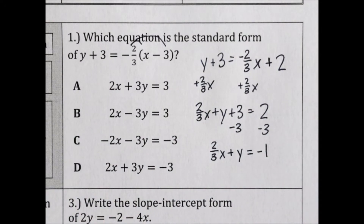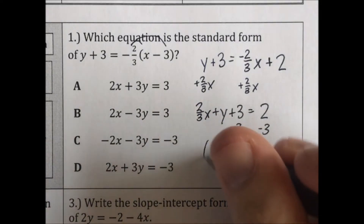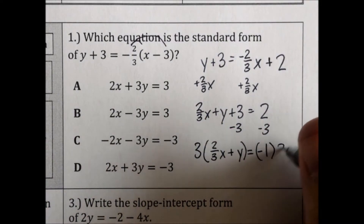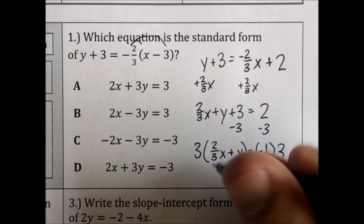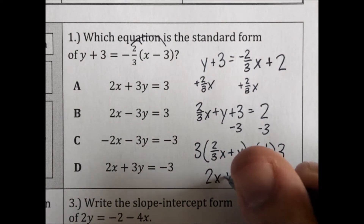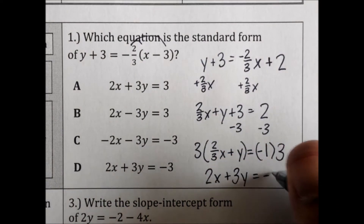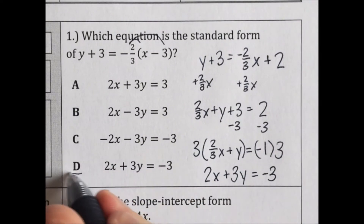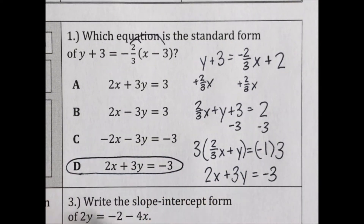Standard form — there cannot be fractions. So we need to multiply every single term on both sides by the lowest common denominator. In this case it's going to be 3. So let's multiply everything by 3. That would be 2x plus 3y equals negative 3, which is choice D.